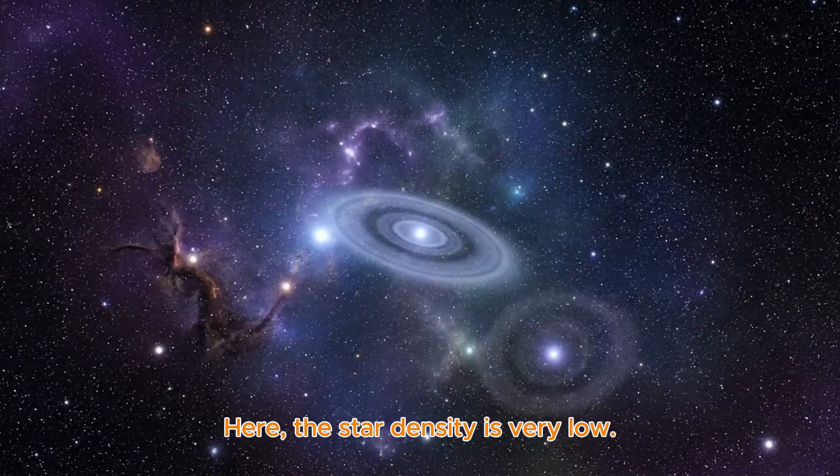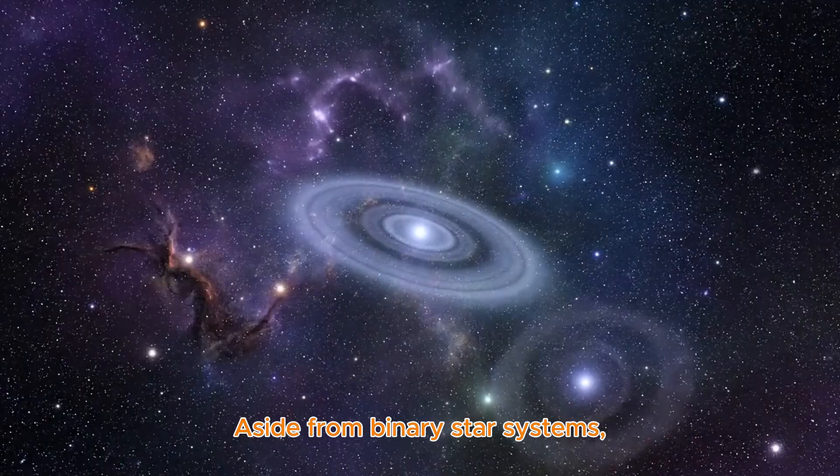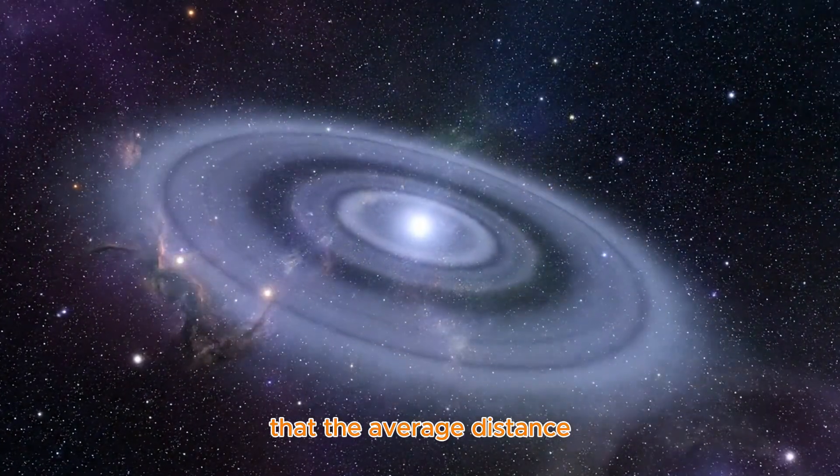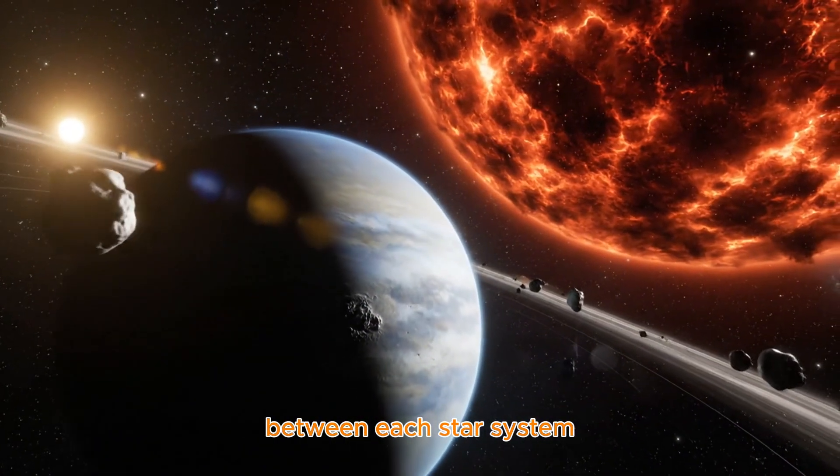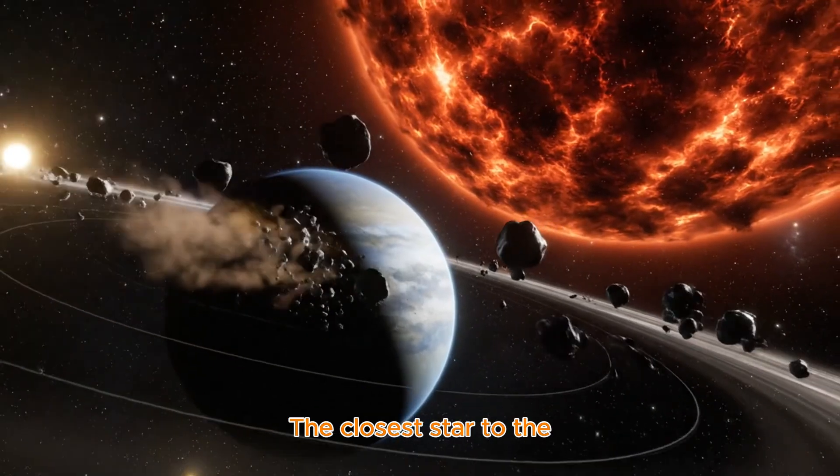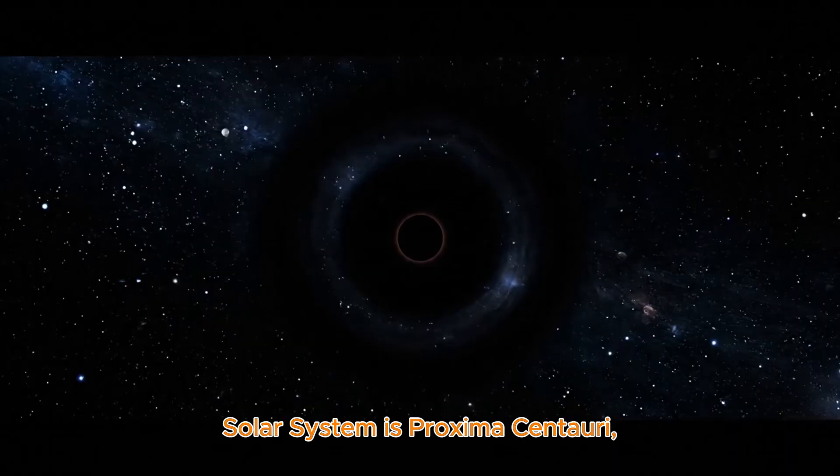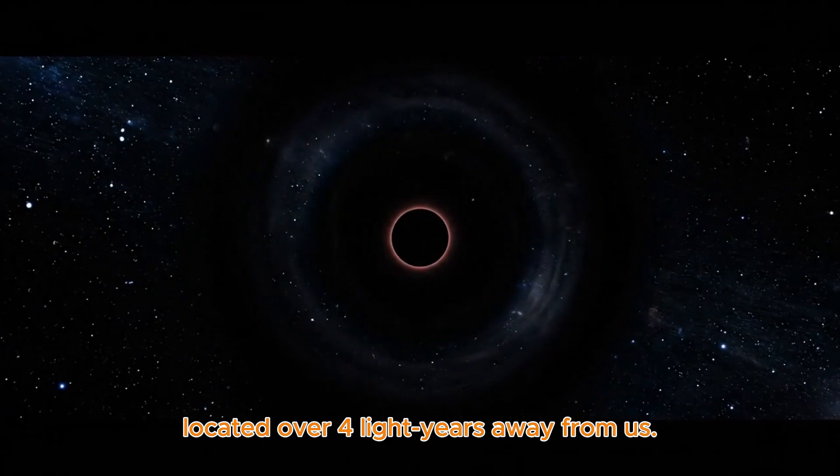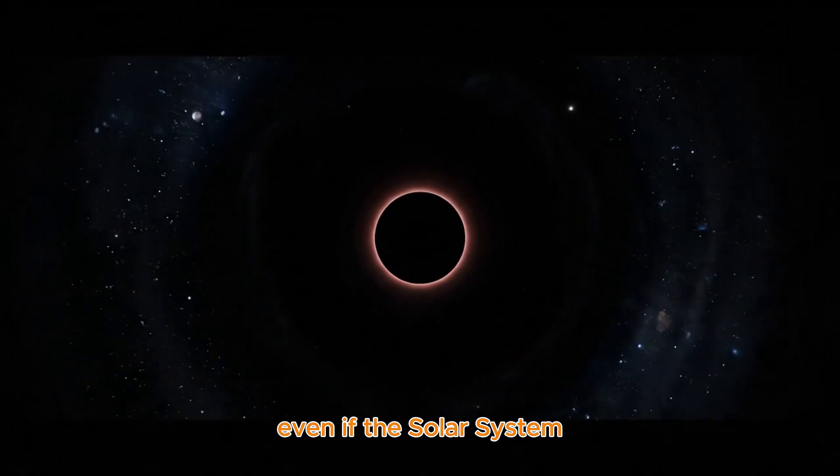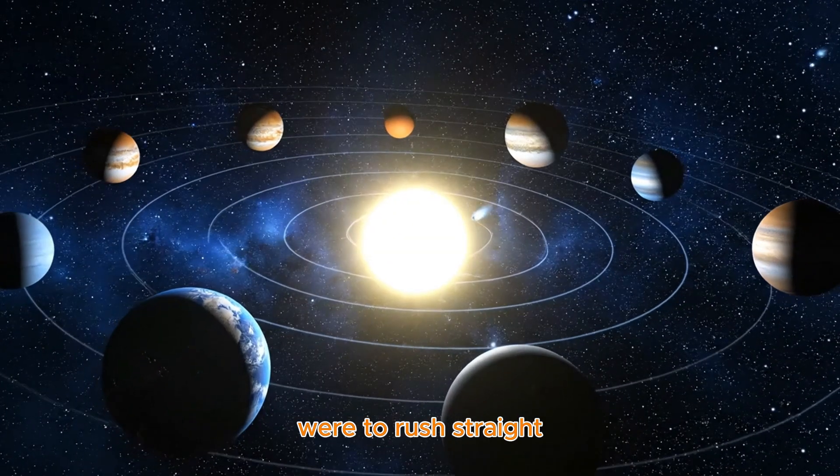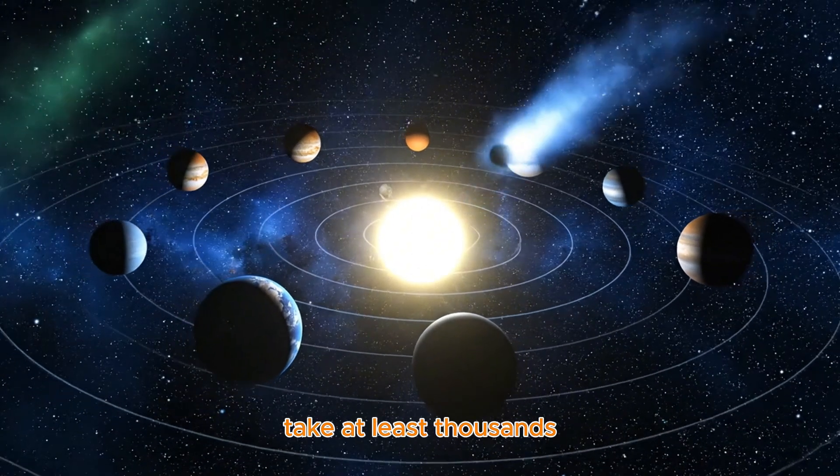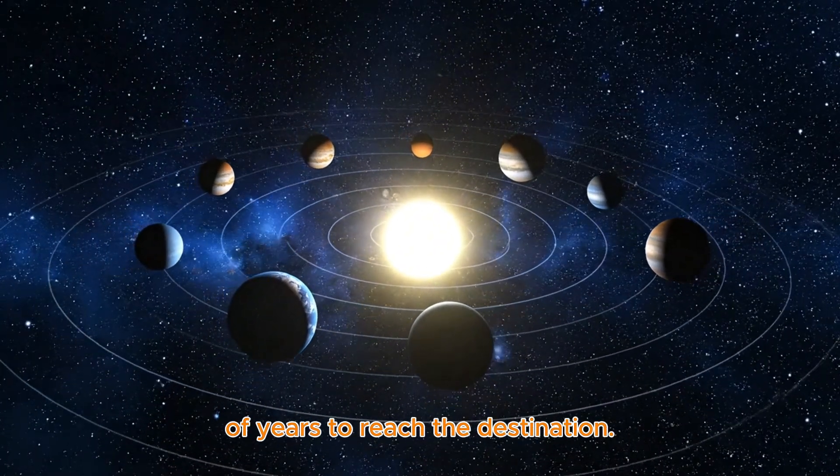Here, the star density is very low. Aside from binary star systems, stars are so thinly distributed that the average distance between each star system often reaches several light years. The closest star to the solar system is Proxima Centauri, located over four light years away from us. Given this immense distance, even if the solar system were to rush straight toward it at 220 kilometers per second, the journey would still take at least thousands of years to reach the destination.